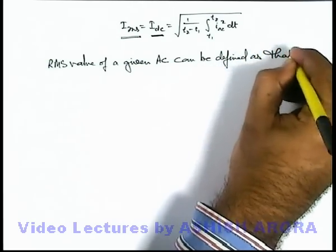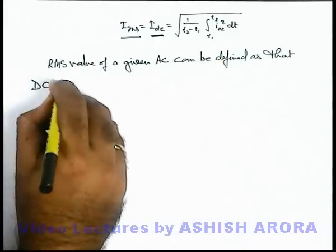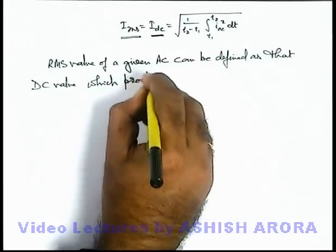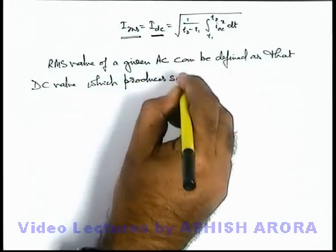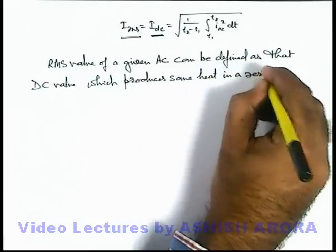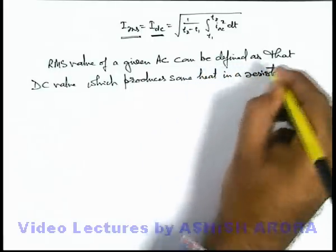that DC value which produces same heat in a resistance